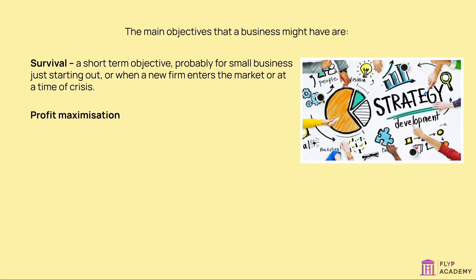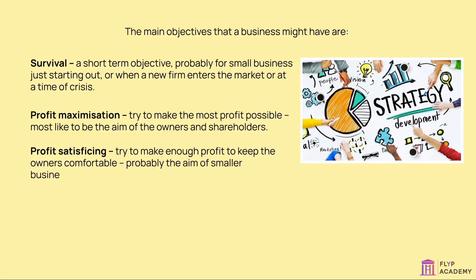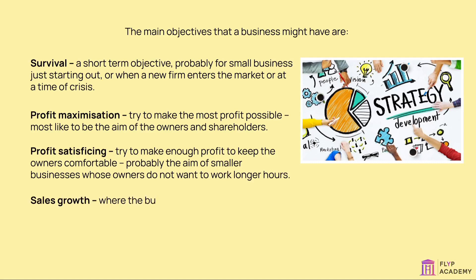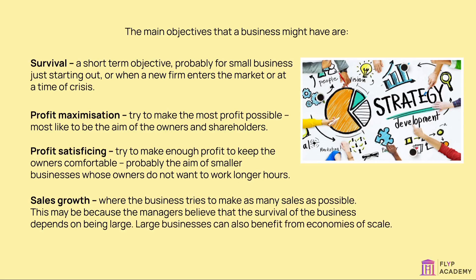Profit maximisation: try to make the most profit possible — most likely to be the aim of the owners and shareholders. Profit satisficing: try to make enough profit to keep the owners comfortable, probably the aim of smaller businesses whose owners do not want to work longer hours. Sales growth: where the business tries to make as many sales as possible, as managers may believe survival depends on being large. Large businesses can also benefit from economies of scale.